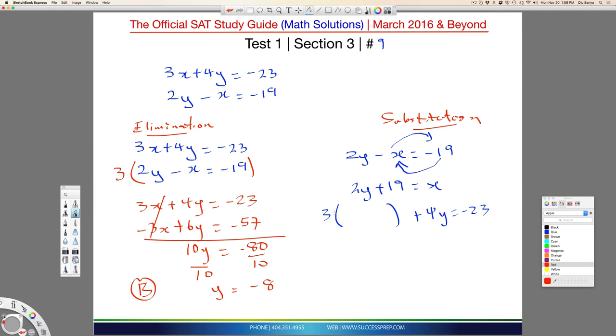So, inside of here, it used to be 3x. Well, that x is 2y plus 19 now. Multiply through, you get 6y plus 3 times the 19. Again, it's 57.